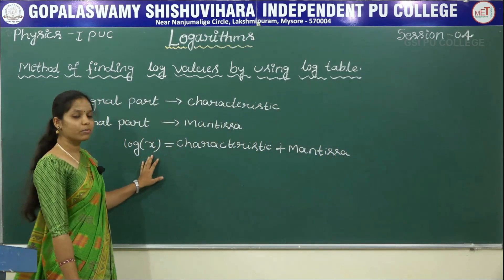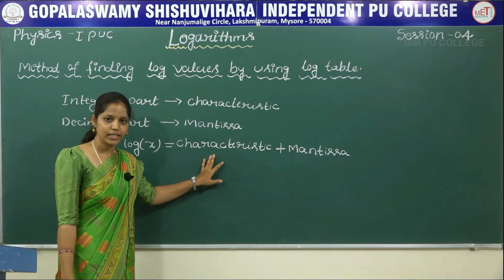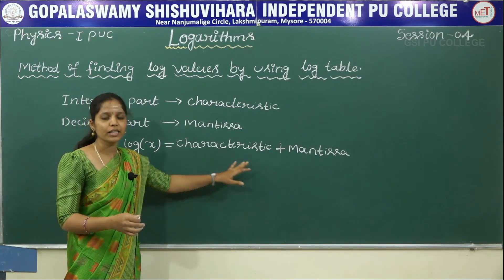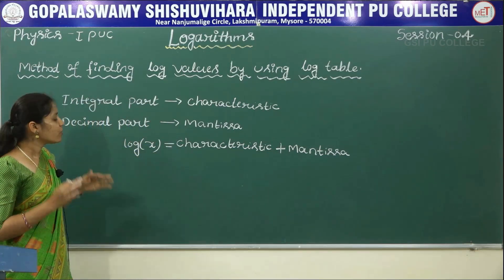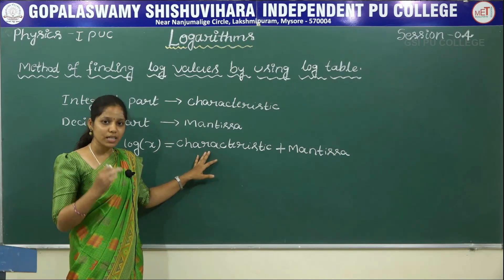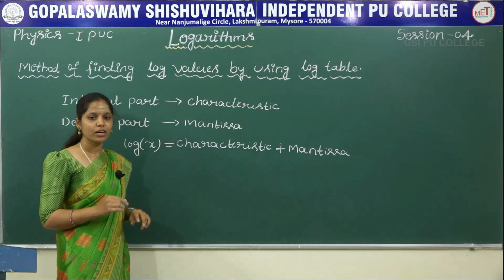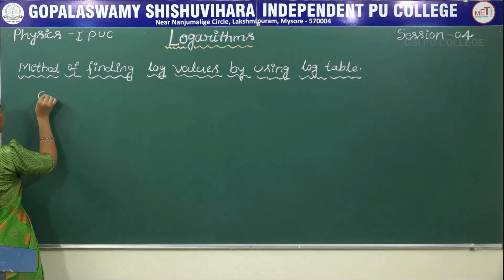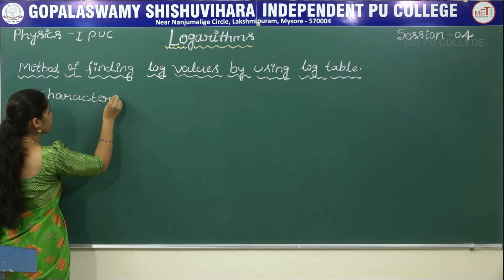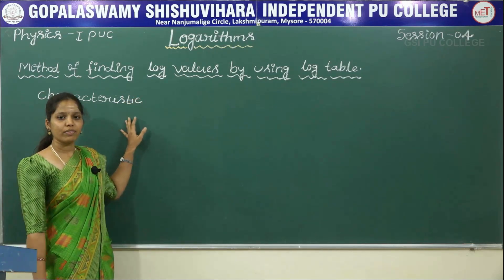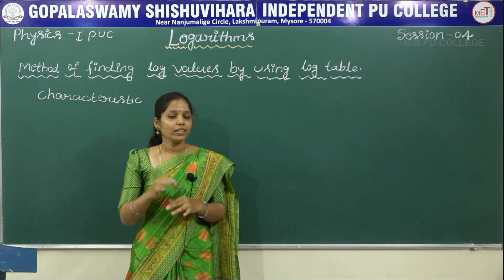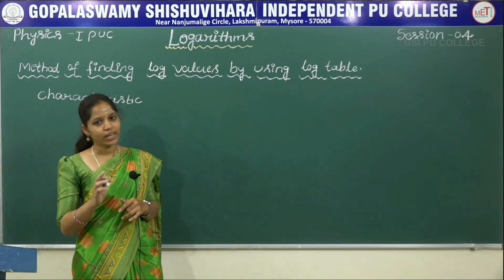The logarithm of any number can be represented as characteristic plus mantissa. Now let us discuss how we can find out the characteristic and mantissa of a given number. We have to follow certain rules to find out the characteristic and some steps to find out the mantissa.